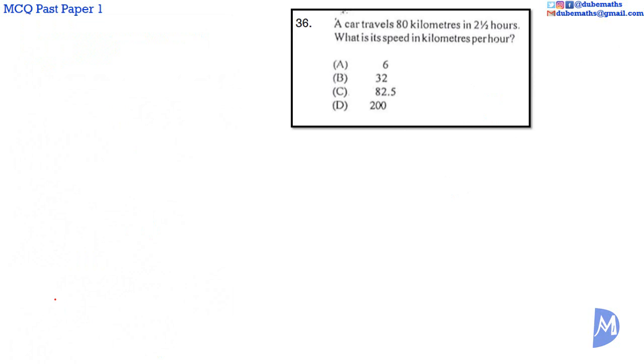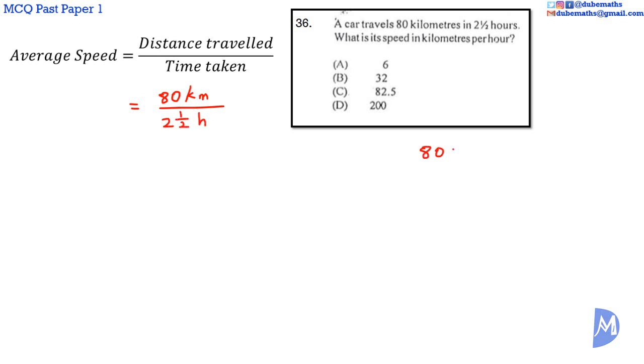Question 36. Average speed is defined as distance traveled over time taken. In this question, the average speed equals 80 kilometers over 2.5 hours. 80 divided by 2.5 is equal to 80 divided by five-halves, which is the same as 80 multiplied by 2 over 5.